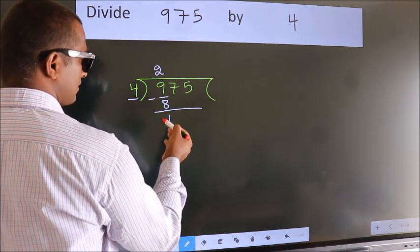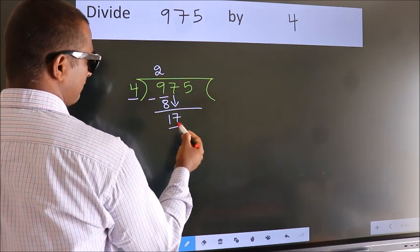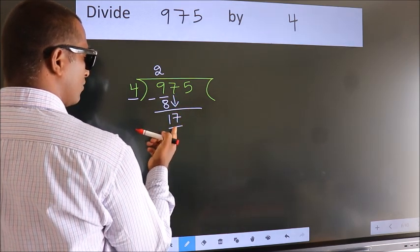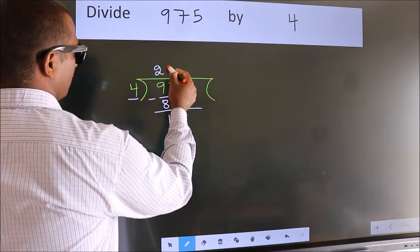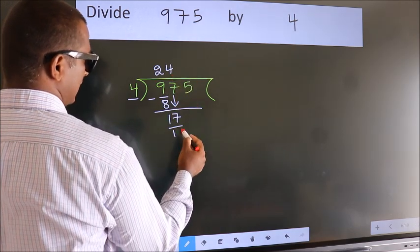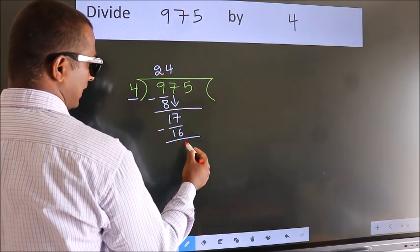After this, bring down the beside number. 7 down, so 17. A number close to 17 in 4 table is 4 fours, 16. Now we subtract. We get 1.